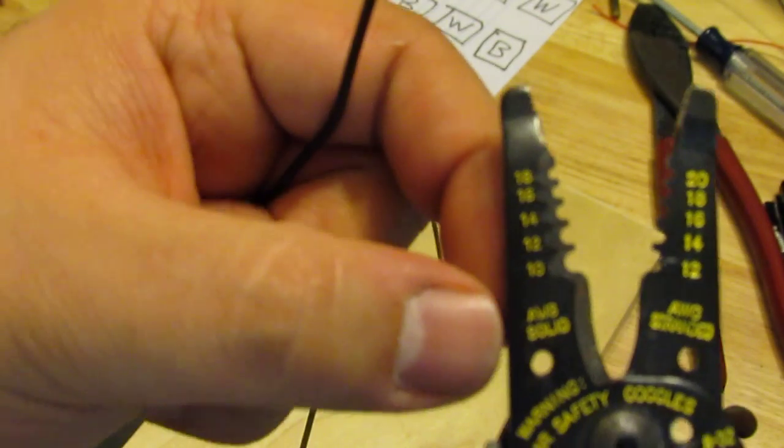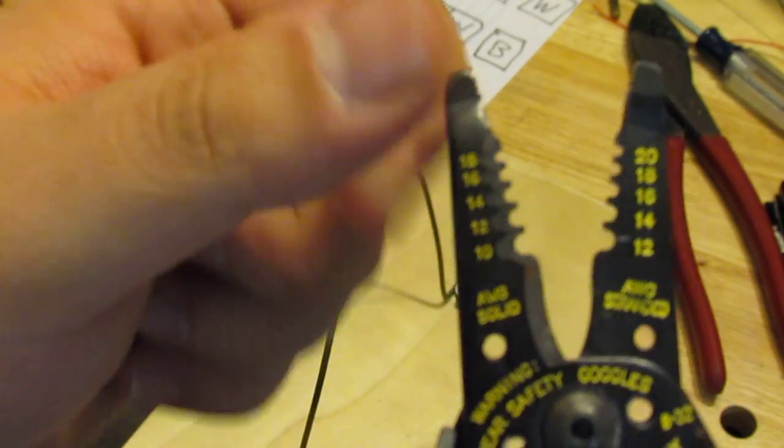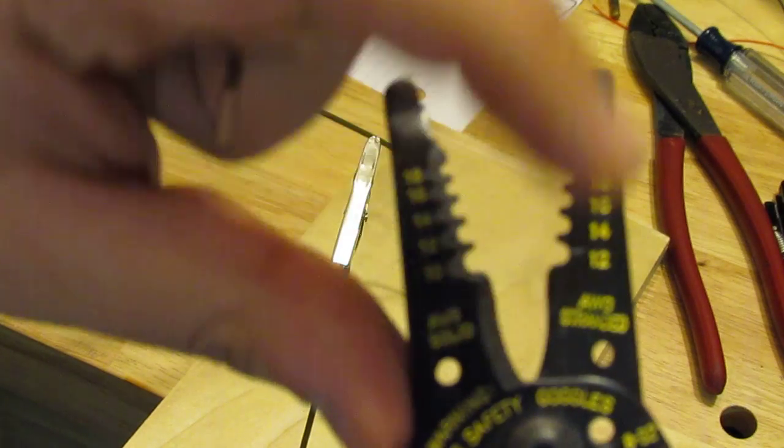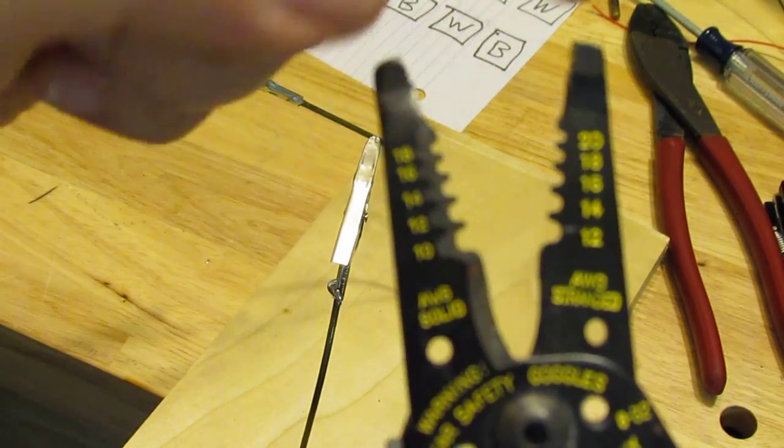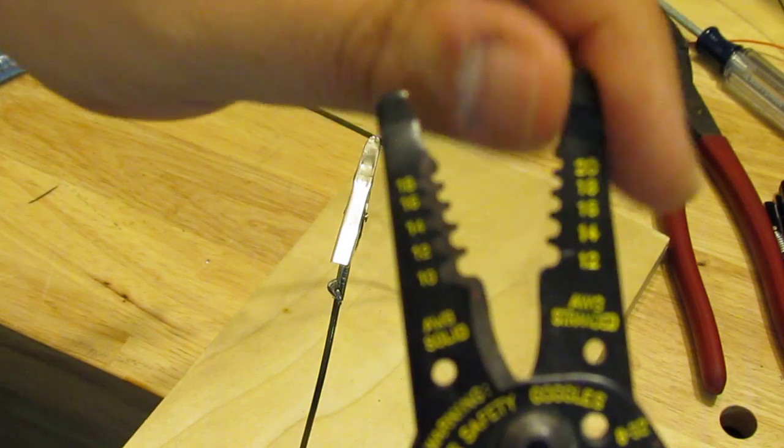And the other side is the stranded side. So if you have a stranded wire, you're going to have to go with the stranded notches here.